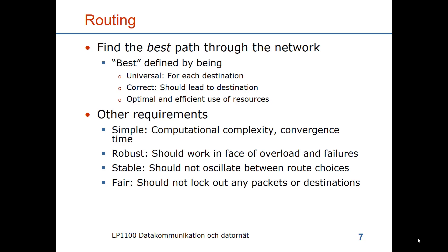It should be robust. The routing depends on the exchange of messages between the switches, and if the network is overloaded, those messages could be delayed or even lost. It should still be possible to compute routes so that you can avoid the overloaded part and switch traffic over to parts of the network which are more lightly loaded. It should also be robust so that if certain links fail, there can be a recomputation of routes to bypass the failure and continue to operate the network. The routing should also be stable — that means if there are several route choices, there should not be any oscillation or frequent changes between them.